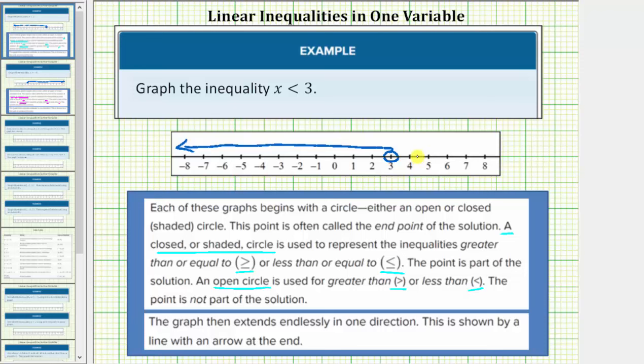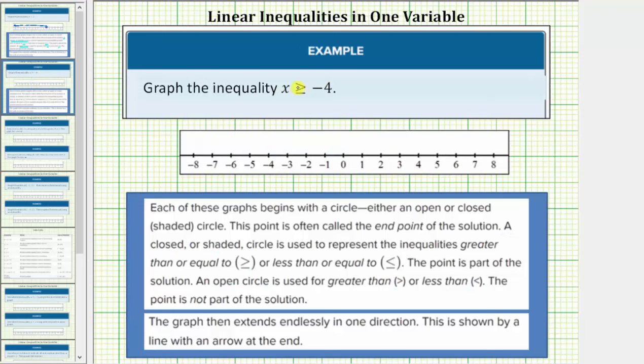Let's look at a second example. Here we want to graph the inequality x greater than or equal to negative 4. Because of the inequality symbol, notice how negative 4 is a solution. Therefore we graph a closed circular point on negative 4.